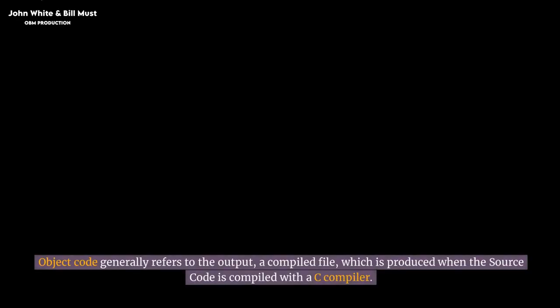Object code generally refers to the output — a compiled file — which is produced when the source code is compiled with a C compiler.